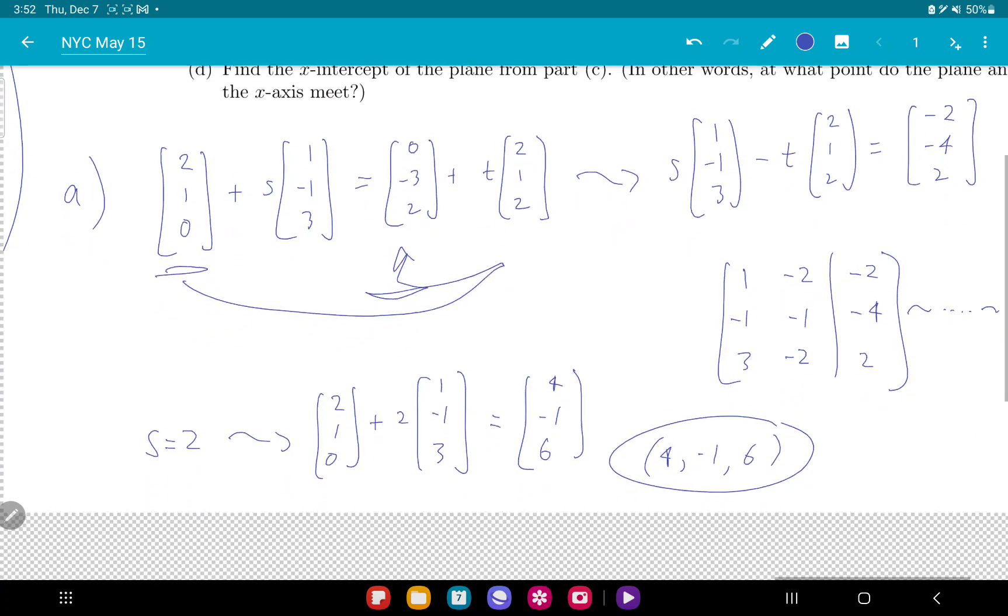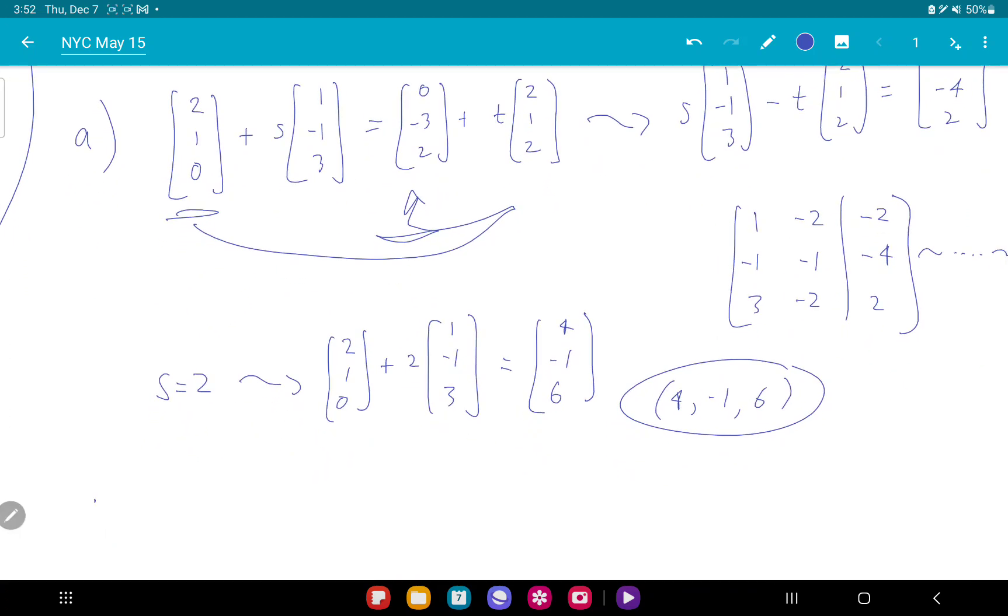Cosine. The angle between the lines is the angle between the direction vectors. So I do the direction vectors in my cosine formula.